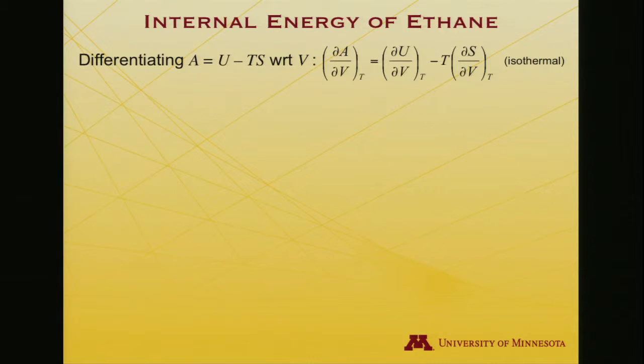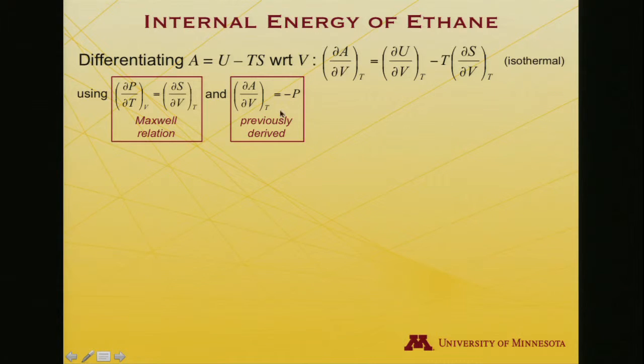Now the internal energy, we can play exactly the same sort of game. So if we differentiate A equals U minus TS with respect to V, we get partial A partial V is equal to partial U partial V minus T partial S partial V. It's isothermal, so I don't have to differentiate temperature. It's not varying at all. It's being held constant. I have a Maxwell relation that we've just been working with. Partial P partial T is equal to partial S partial V. And I've already derived just a little while ago that partial A partial V is minus the pressure. And so if I make these substitutions, I get, as I rearrange this, that partial U partial V, the change in internal energy with respect to the change in volume, is negative P plus T times partial P partial T.